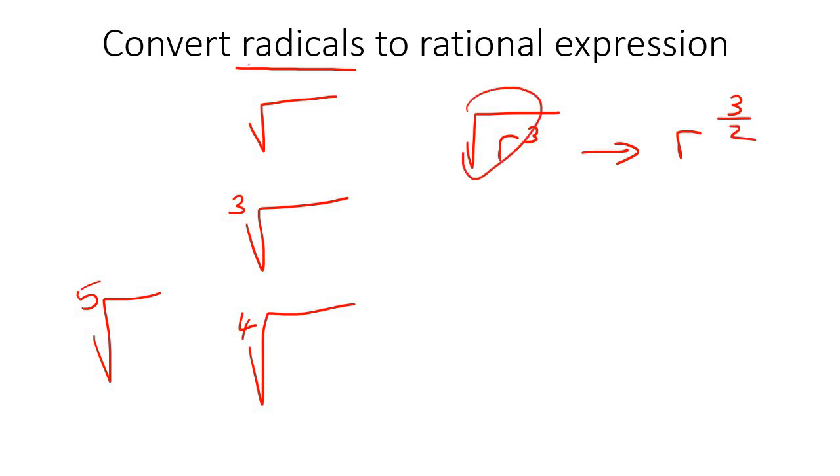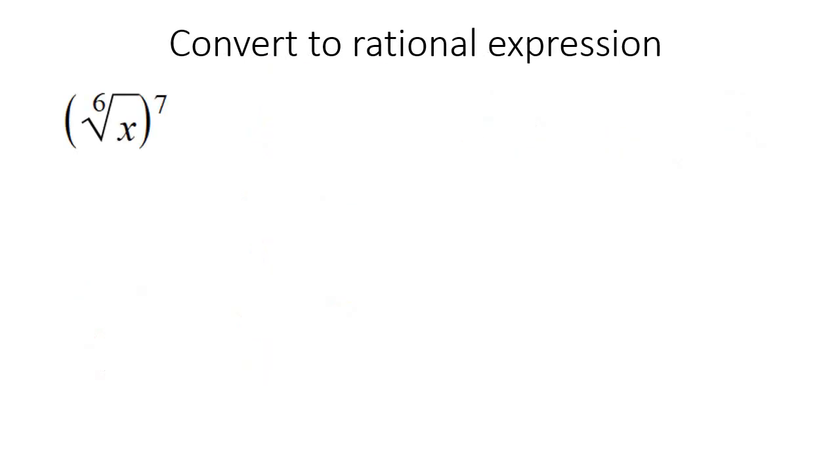We're going to get rid of the root symbol. Some teachers do this in one step, but I'd rather show you in two steps as it will make more sense. I want you to remember that this exponent, if there's nothing there, then it's a one. So forget about the seven for now. What I want you to do is remember that to rewrite that, it's the same as x, and then you take the inside number divided by the outside number.